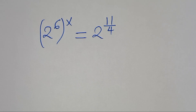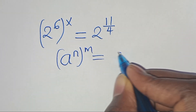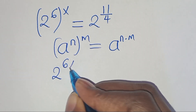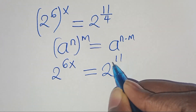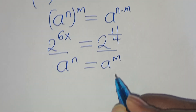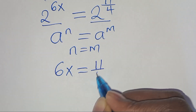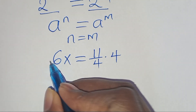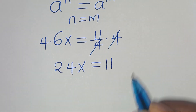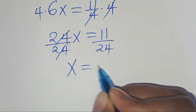Now, from here we have 2 to the power of 6, raised to the power of x, this is in the form of a to the power of n raised to the power of m, which we can express as a to the power of n times m. Applying this exponent property, then we have 2 to the power of 6x, this is equal to 2 to the power of 11 over 4. Since the bases are common, exponent n equals m, therefore 6x equals 11 over 4. Multiplying both sides by 4, we get 24x equals 11, so dividing both sides by 24, x is equal to 11 over 24.